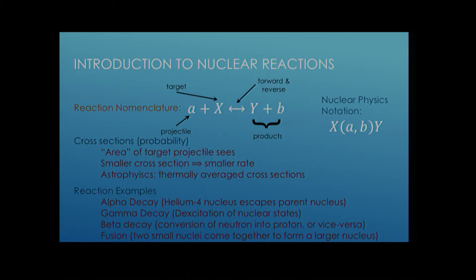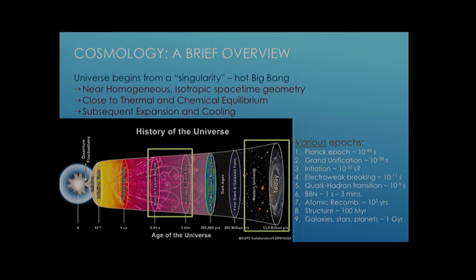Basically, all you need to know is that if you have a small cross-section, you have a small rate, a larger cross-section, larger rate. In astrophysics, we have to average these cross-sections because we have lots of different energy scales. So as an example of some reactions, some nuclei aren't stable, and so they can decay by alpha-beta-gamma emission. We'll focus here, since we're interested in nucleosynthesis, on fusion, two or more nuclei coming together to form something larger.